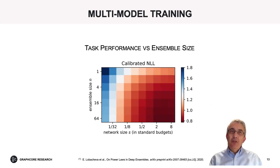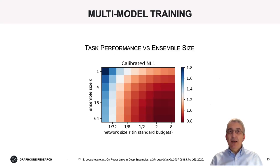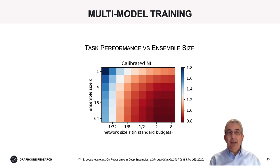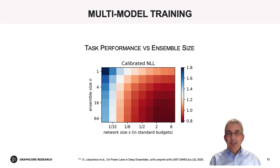Additionally, there is the opportunity of training multiple models instead of a single large model. This immediately gives an advantage in terms of improved task performance for the same computation cost, and this improved task performance is achieved very efficiently. Training multiple replicas of the same model with different random initializations has the great advantage of completely eliminating the need for communication between the models, compared to data parallelism, for example.